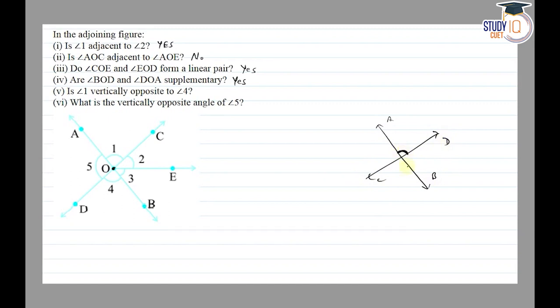This angle is vertically opposite to this. So angle 1, is angle 1 vertically opposite to angle 4? So angle 1 is made from AB and CD, and angle 4 is also made from AB and CD. This is vertically opposite, so this is vertically opposite.